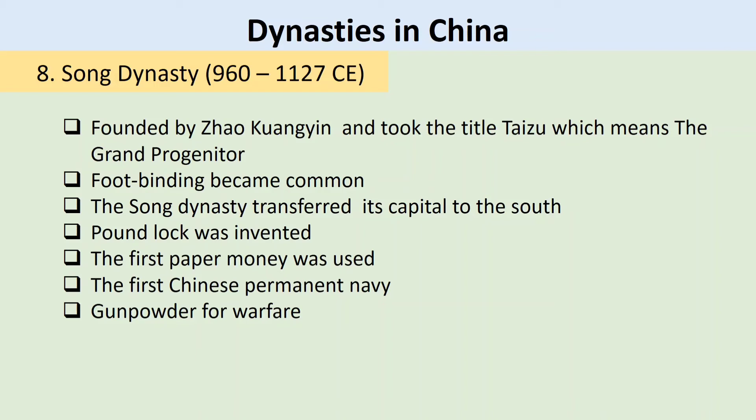Just when the Song had become accustomed to their new state in the south, the nomadic Mongol tribes had been assembled under the leadership of Genghis Khan, who threatened to dismantle the Song Dynasty.